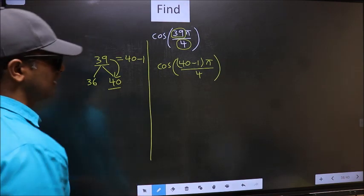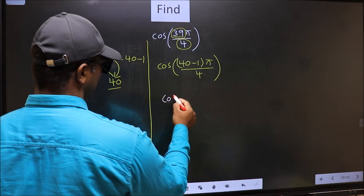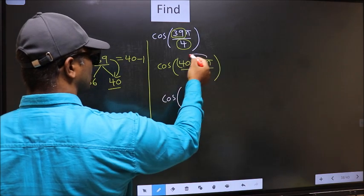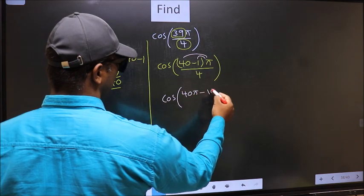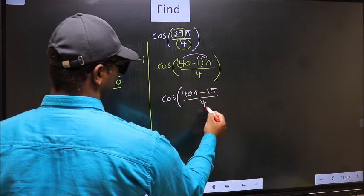Next, cos. Now you should open up the brackets. You get 40 pi minus 1 pi, by 4.